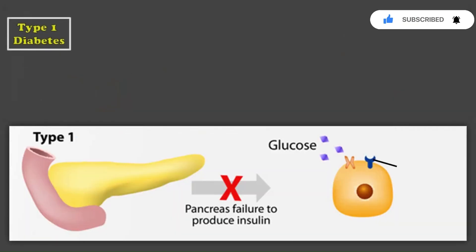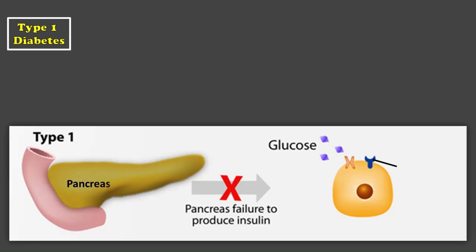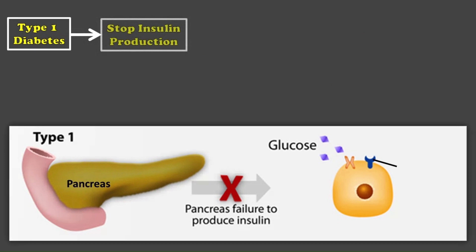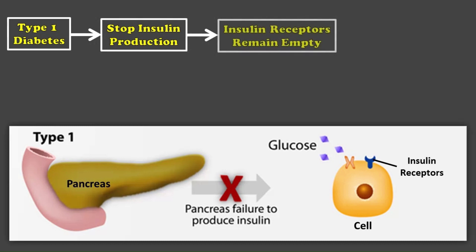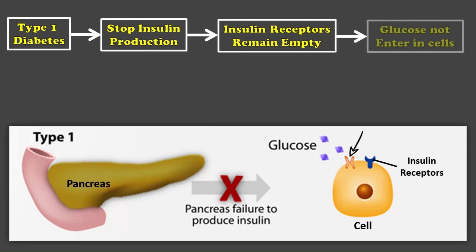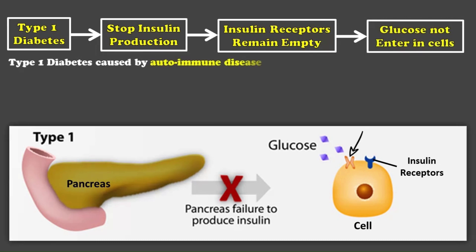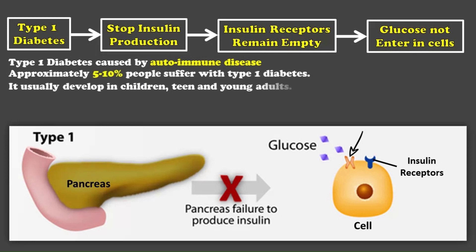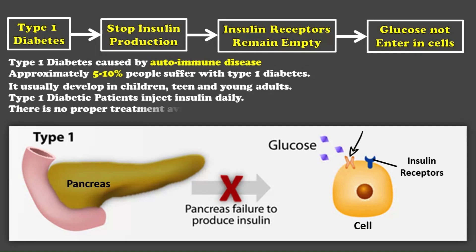If a person has type 1 diabetes, then the production of insulin stops, due to which the insulin receptors on the cells in the body do not work and glucose cannot enter into the cells. Sometimes it is also caused due to autoimmune disease. Currently, around 5–10% of people in the world are suffering from type 1 diabetes, and most of them are children and young adults. Type 1 diabetes patients need daily insulin injections, and at this time no specific treatment has been found for it.